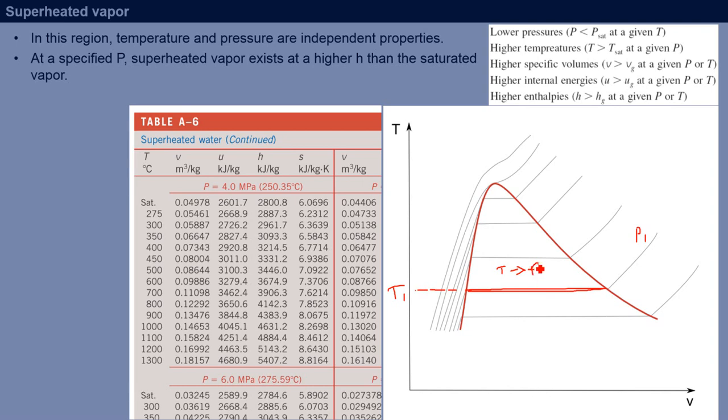So we say in the saturation region temperature and pressure are dependent. When you are given temperature, you know the pressure just because it is saturated.